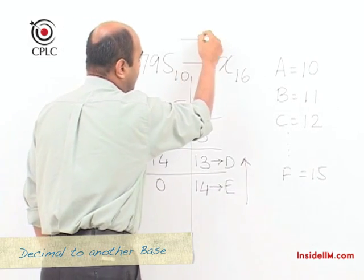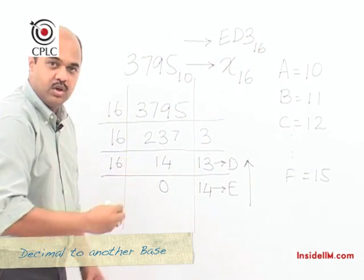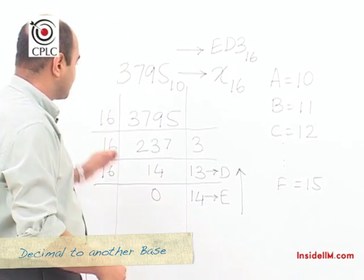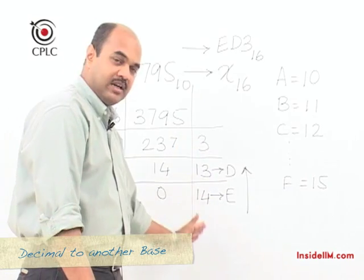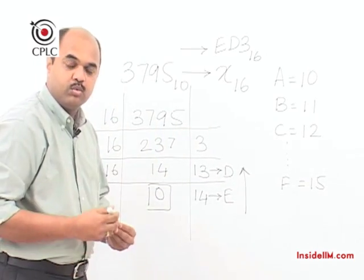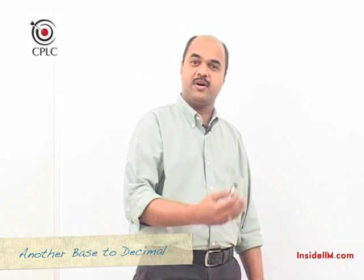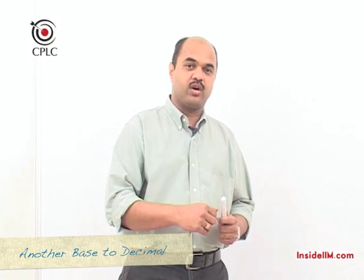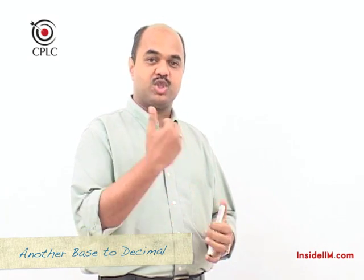So whenever we convert a number from the decimal number system into any other number system, we always make use of the division method: we keep dividing by the new base, keep writing the quotients and remainders, stop when we get a quotient of 0, and the remainders taken in reverse order give us the answer. We have seen how to convert from decimal into some other base. Now let's work the other way around — suppose I have a number in some other base and want to convert it back to the decimal number system.